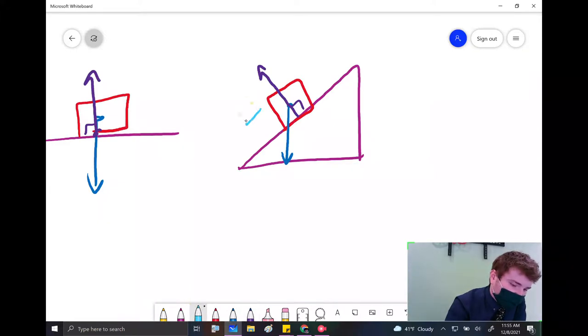Now if this thing, let's say, is sliding down this incline, let's say our velocity is directed downward. Well, we know friction is opposing my motion. So friction should be going this way. Normal force should be going this way.